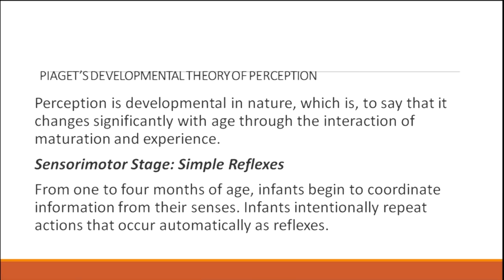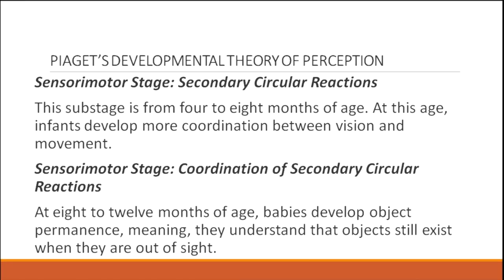Piaget's developmental theory of perception holds that perception is developmental in nature — it changes significantly with age through the interaction of maturation and experience. The sensory motor stage includes simple reflexes. From one to four months of age, infants begin to coordinate information from their senses and intentionally repeat actions that initially occur as reflexes.